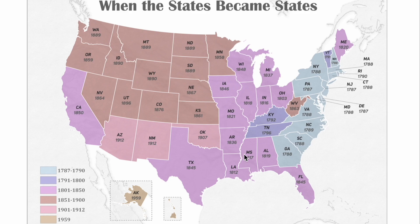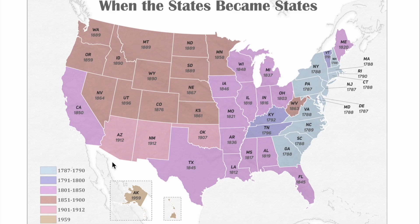The 1801–1850 range covers much of the surrounding area, Florida, California — which was part of the Compromise of 1850 — and Maine, which became a state in 1820. Most of the West falls in the brown area from 1851–1900, plus West Virginia, which broke off from Virginia in 1863 during the Civil War. Then from 1901 to 1912 you get Arizona, New Mexico, and Oklahoma, and finally Alaska and Hawaii were added in 1959.